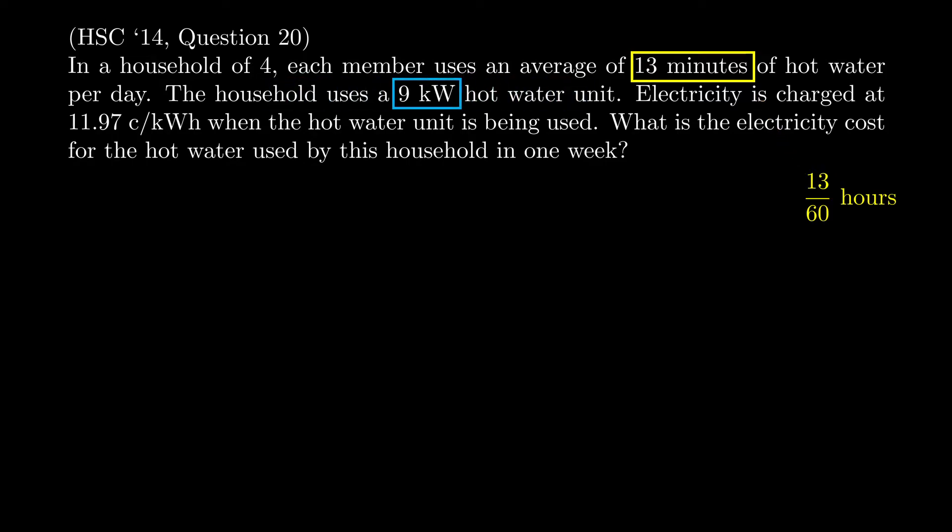So each person will use, in terms of energy, we multiply the power by the time. Notice again in the time we've divided by 60 to turn the minutes to hours. 9 is kilowatts, the 13 over 60 is now hours, so the unit of energy is kilowatt-hours. You calculate that: 1.95 kilowatt-hours per day.